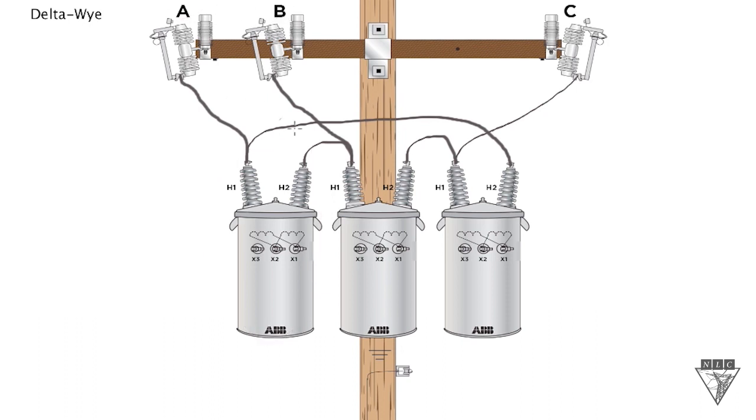If you look at the center one, let's do another example. The H1 on the center transformer goes up to B phase, and the H2 on the center transformer comes over here and it goes up to C phase. So there's another phase-to-phase connection between B phase and C phase. All right, so that's our primary connection on the delta, delta Y bank.